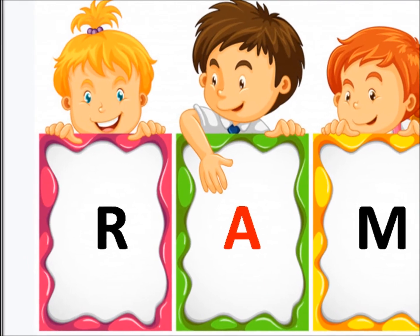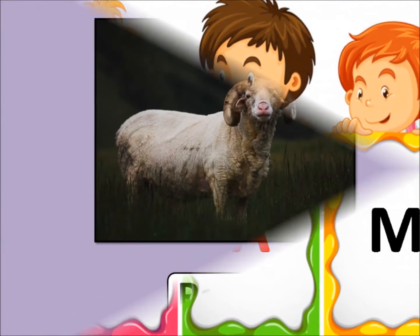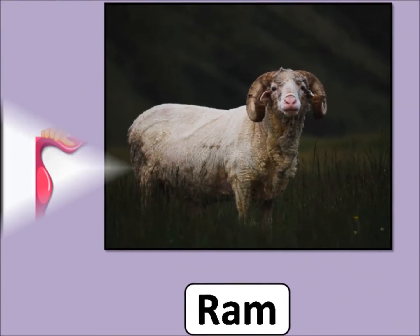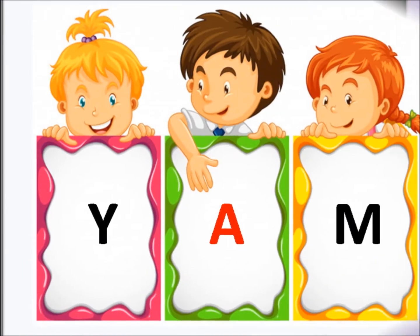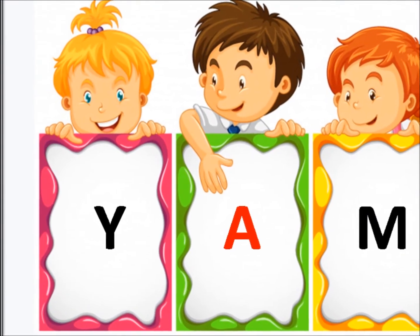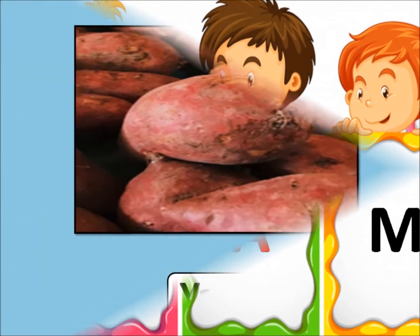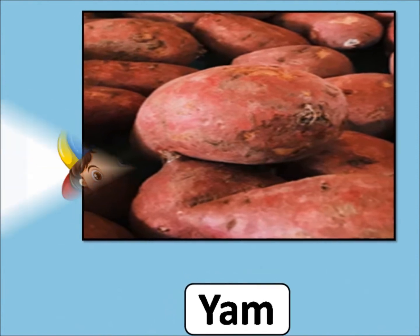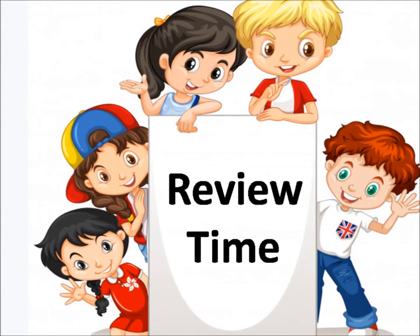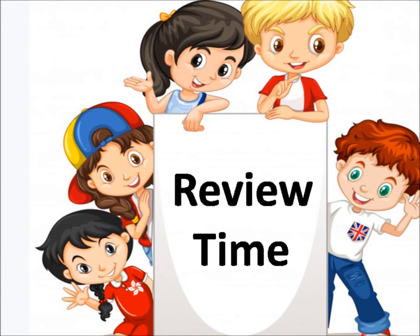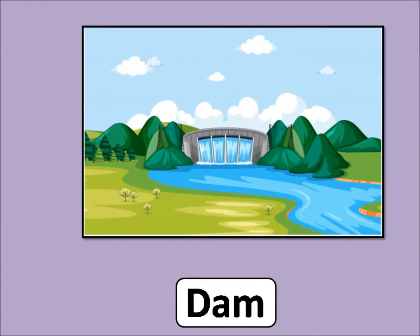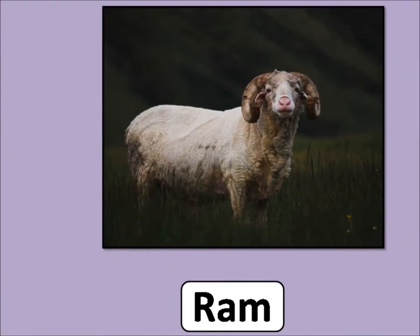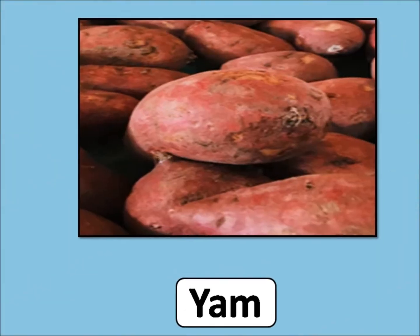R, A, M — R, Am — Ram. Y, A, M — Y, Am — Yam. Let's review our AM words: Dam, Jam, Ram, Yam.